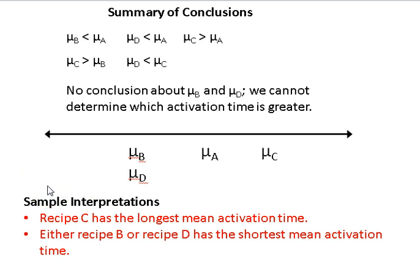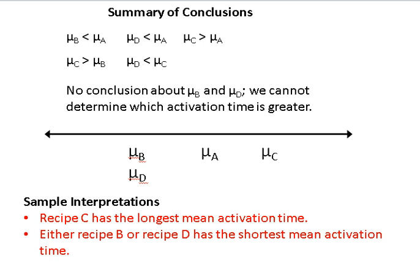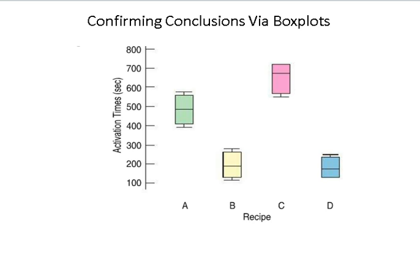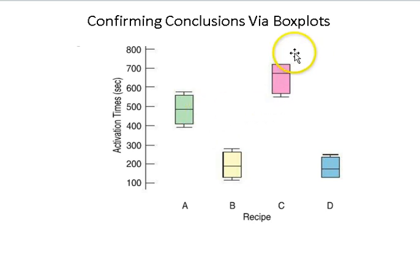Here are some sample interpretations. One question might be: which recipe has the longest activation time? From our conclusions and visual, recipe C has the longest activation time — it takes the longest time to activate the yeast. Another question: which recipe gives the shortest activation time, on average? I conclude that either recipe B or recipe D has the shortest mean activation time. The box plots from the text confirm our conclusions — recipe B or D gives the shortest activation time, recipe A is in the middle, and recipe C gave the longest activation time.